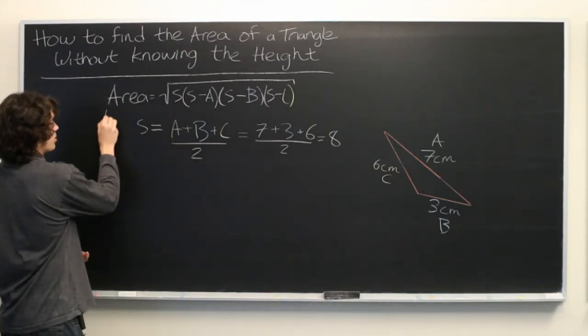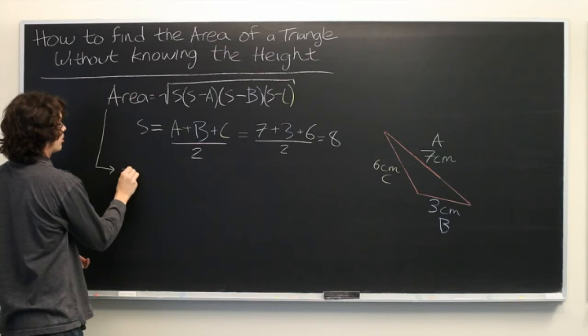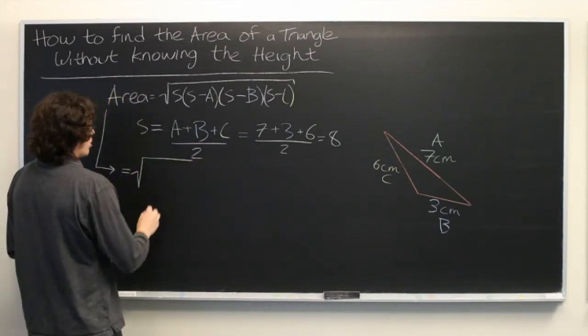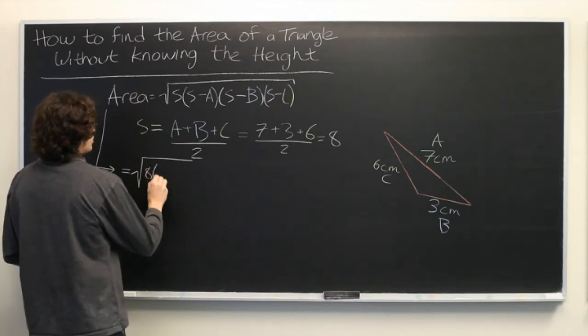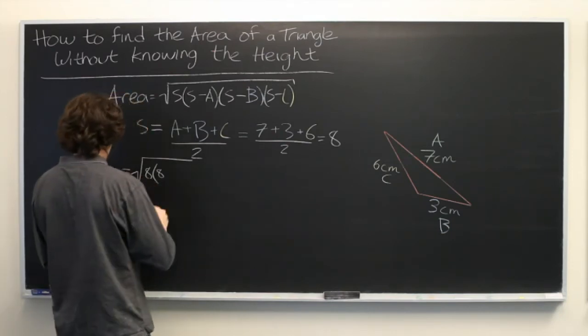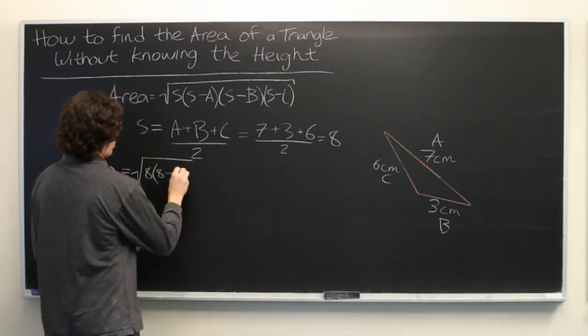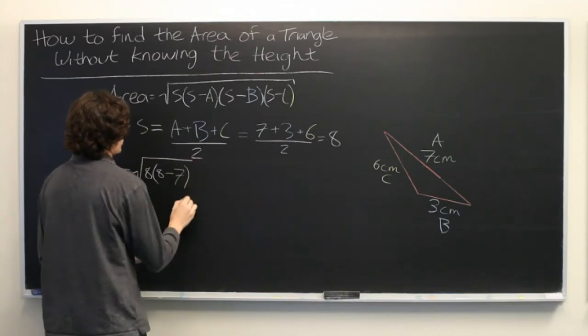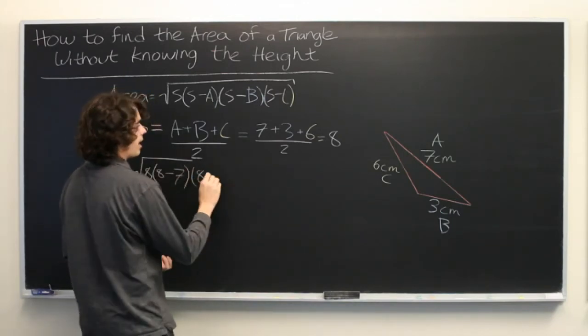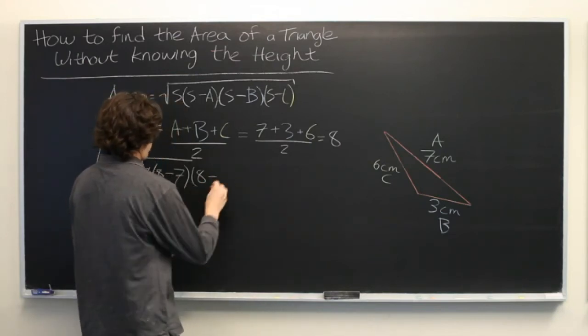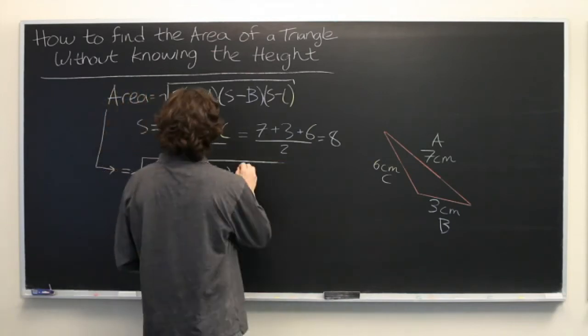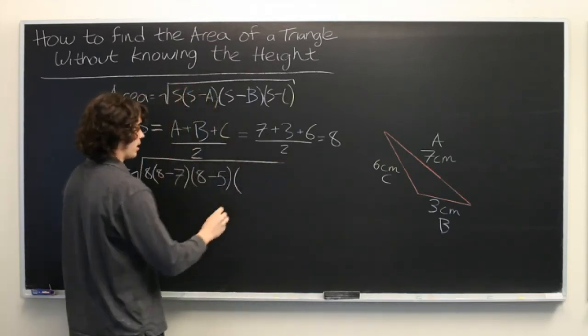Let's continue this computation. We'll plug in our numbers. We have 8 times (8 minus A, where A is 7) times (8 minus B is 5) times (8 minus C which is 6).